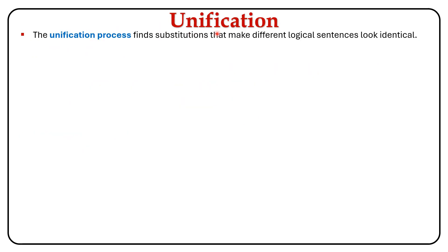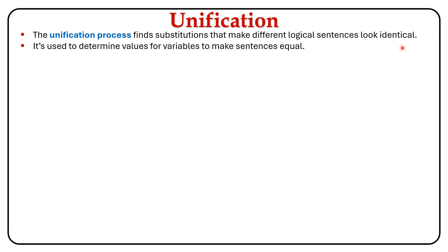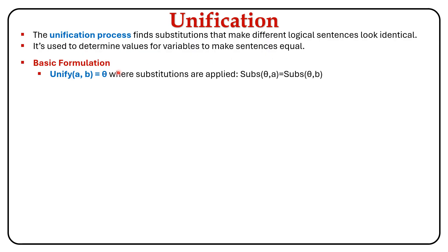Let us check out what unification is. The unification process finds a substitution that makes logical sentences look identical. It is used to determine values for variables to make sentences equal. The basic formulation is: unify(A, B) = θ, where substitutions are applied such that subst(θ, A) = subst(θ, B).